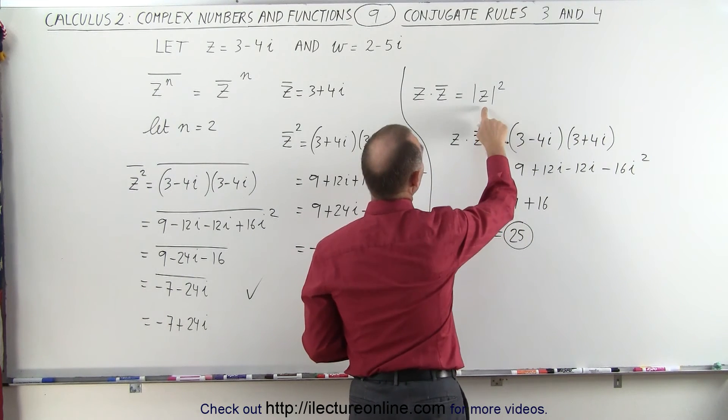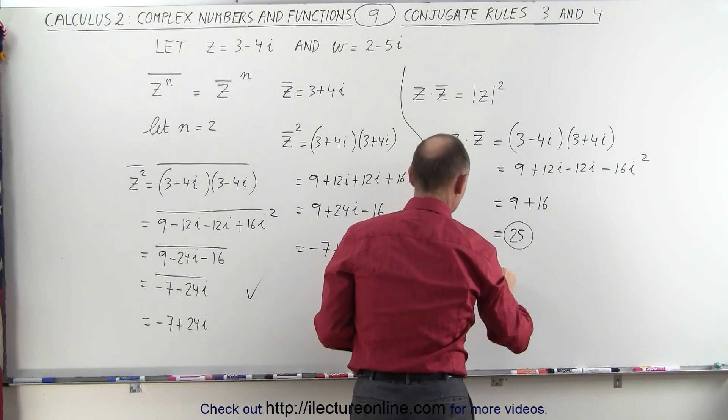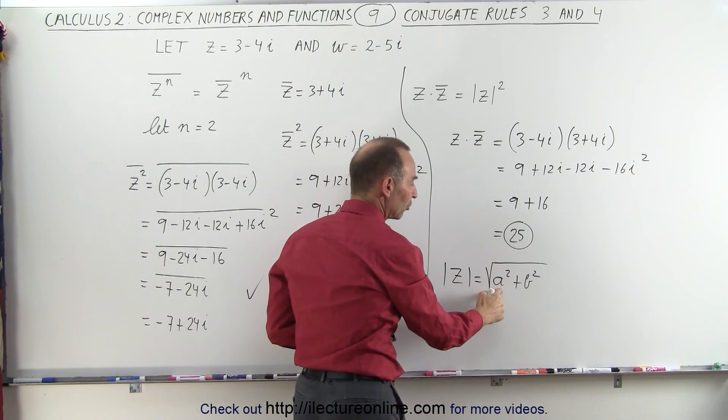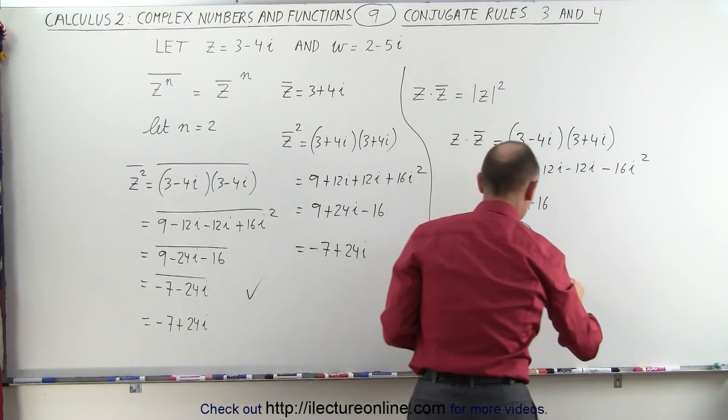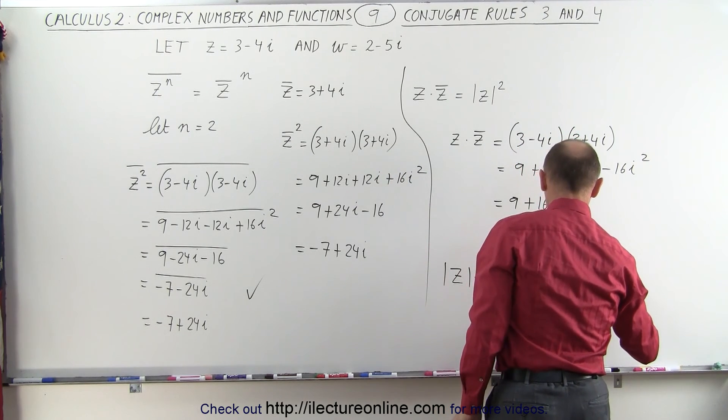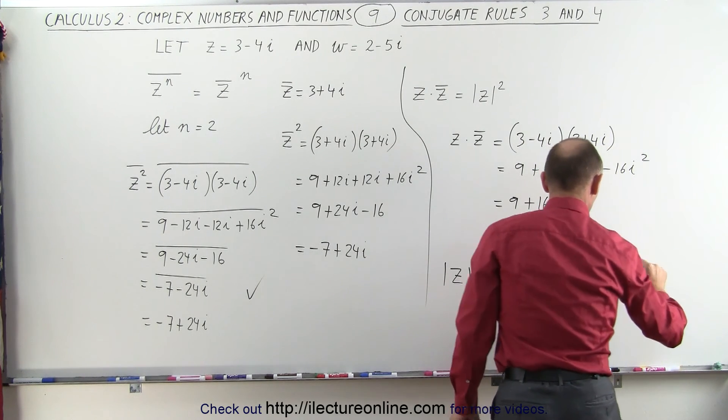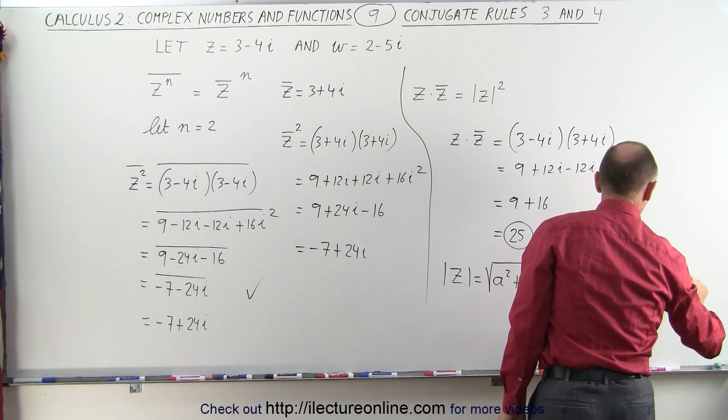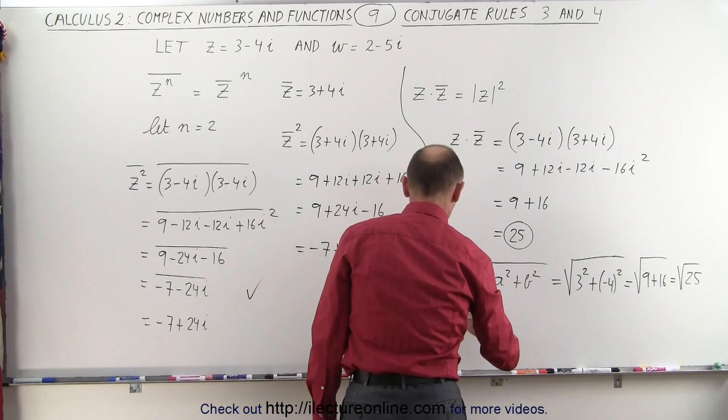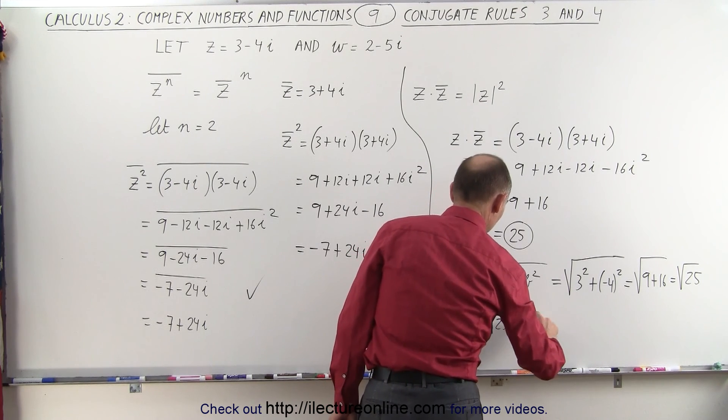Now, do we get the same result when we take the modulus and square it? Well, the modulus of z is defined as the square root of a squared plus b squared, the magnitude of the real part squared plus the magnitude of the imaginary part squared. So let's do that. This is equal to the square root of 3 squared plus the magnitude of minus 4 squared, which is equal to the square root of 9 plus 16, which is the square root of 25. Now, if we take that result and square it, we can then say that the modulus squared is equal to the square root of 25 squared, which is equal to 25.